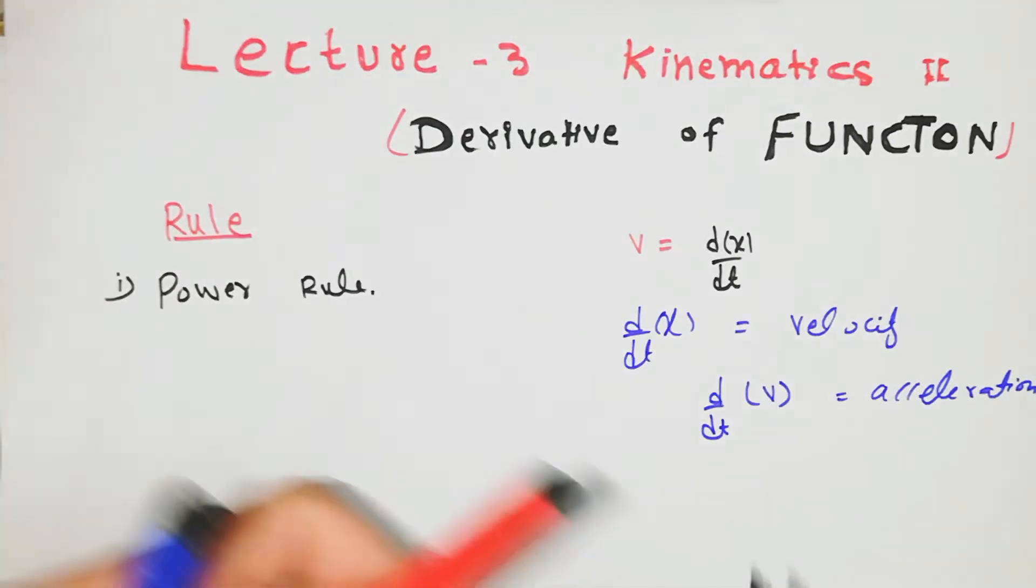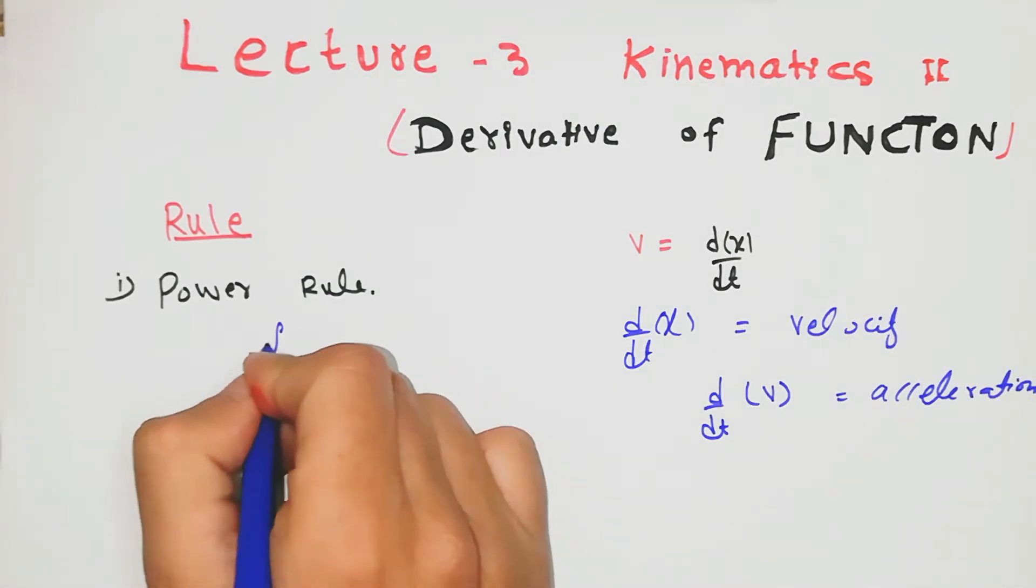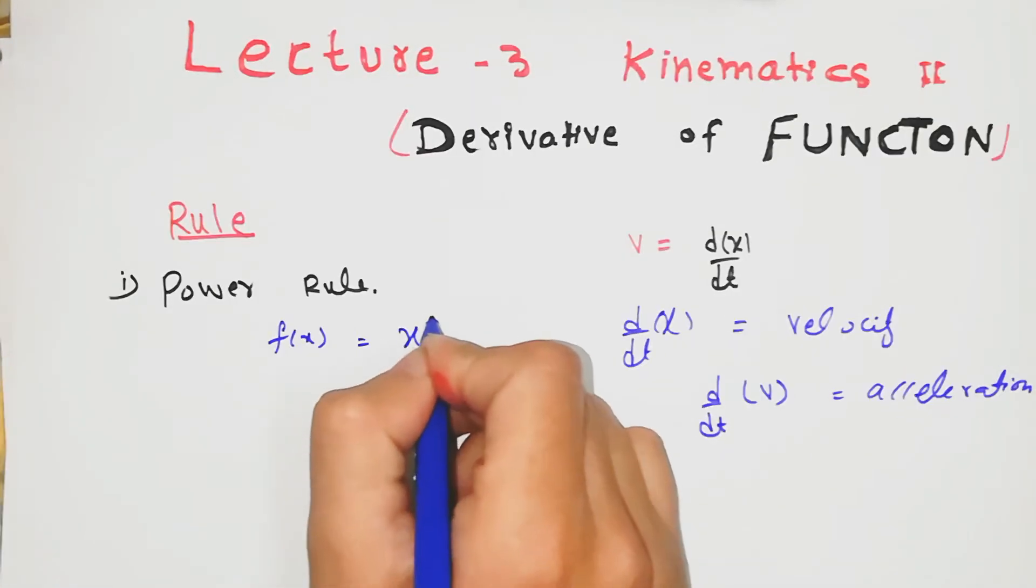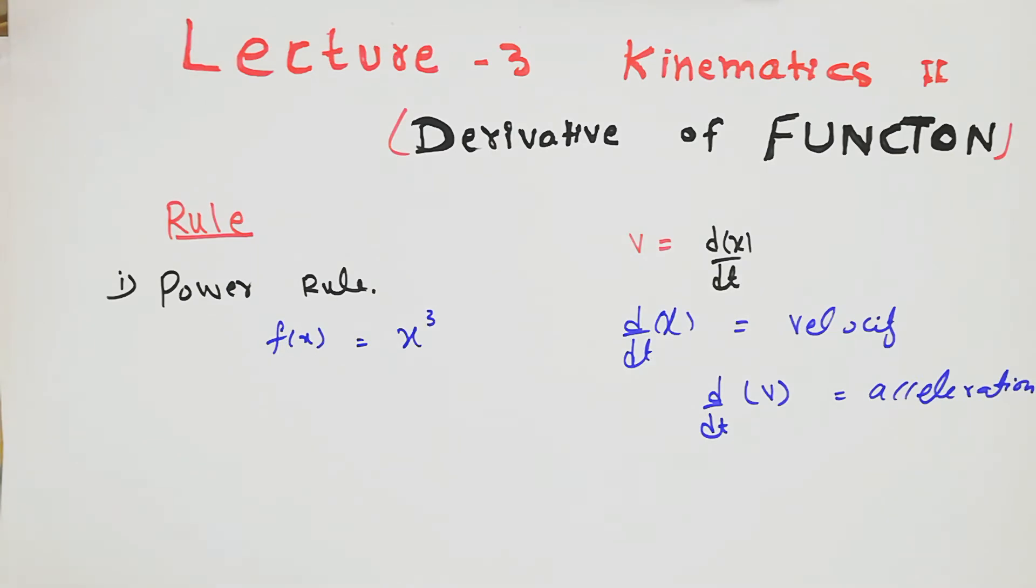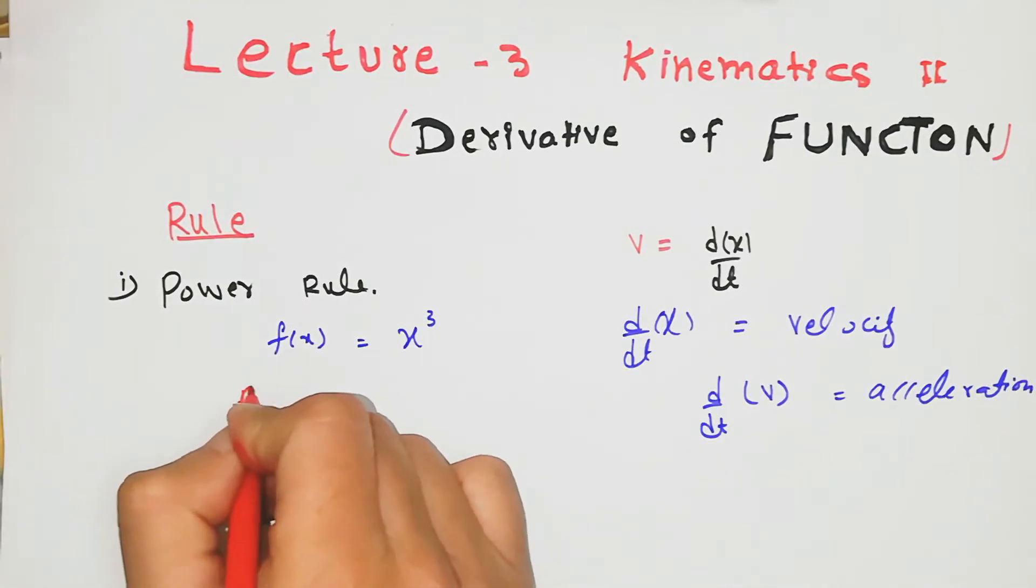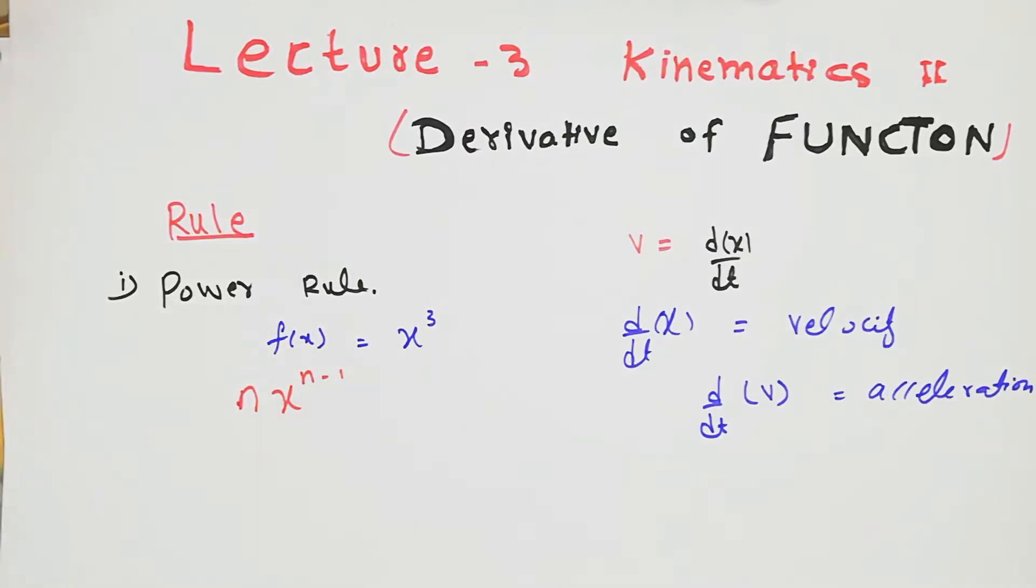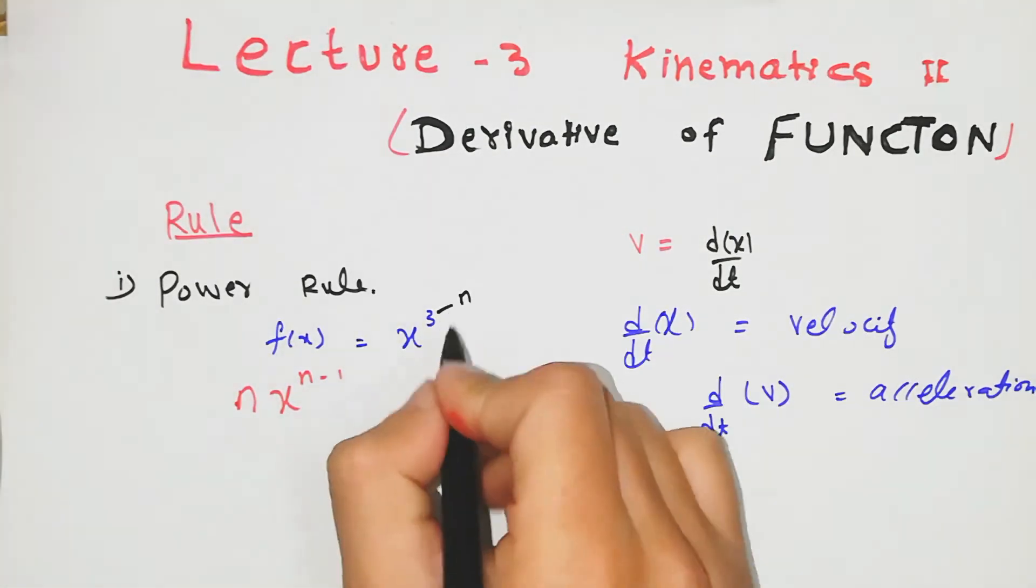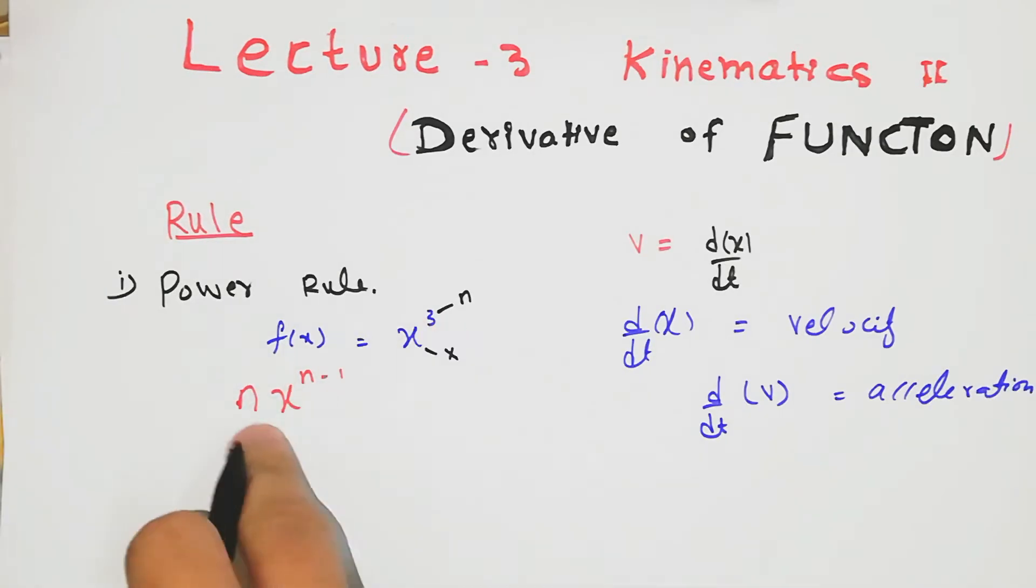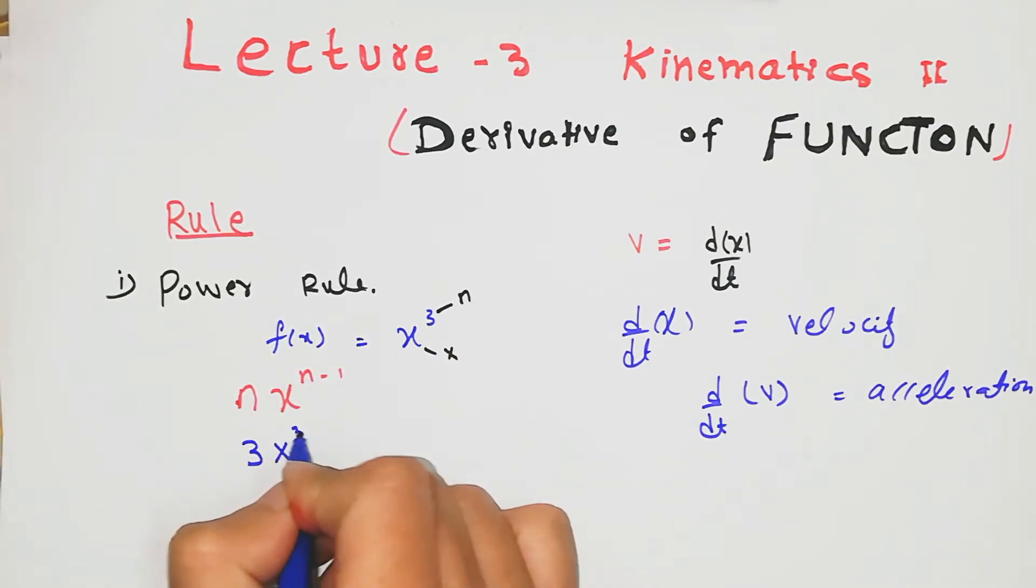Power rule: how we apply this on any function. Let's say function f of x, where x is the argument of the function f. If x to the power 3, what will be the derivative? Power rule is n times x to the n minus 1. We have 3 as n, so the derivative is 3x squared.